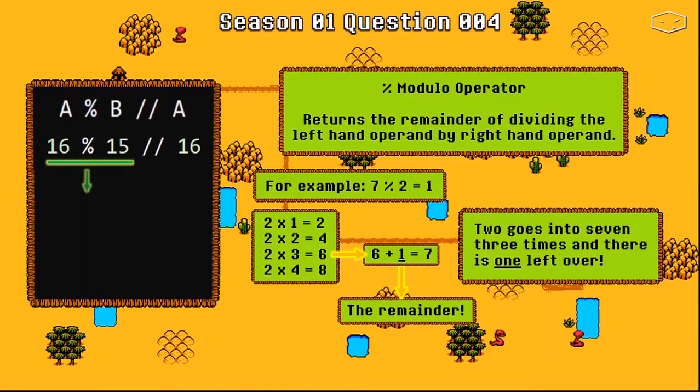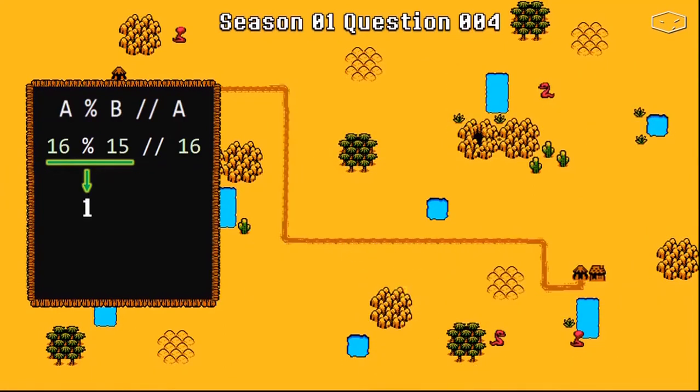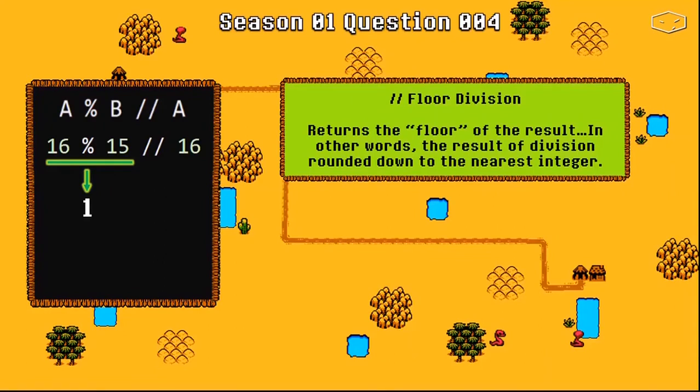Let's take a look at the other operator, and it is the floor division. It returns the floor of the result—in other words, the result of division rounded down to the nearest integer.